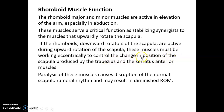Paralysis of the rhomboid muscles causes disruption of the normal scapulohumeral rhythm. In scapulohumeral rhythm, 2 degrees of humeral motion correspond to 1 degree of scapular motion. So if the rhomboids are affected, this scapulohumeral rhythm will also be affected.